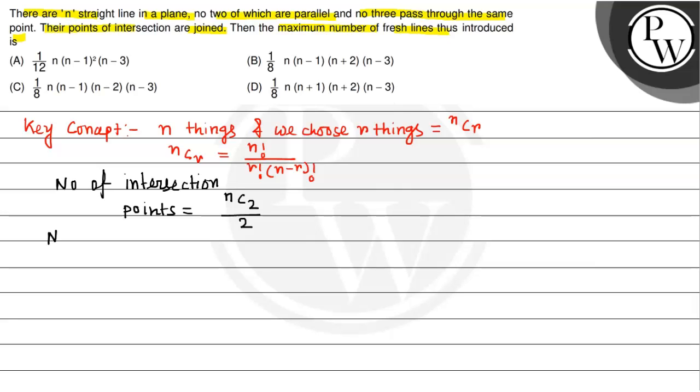Now, the number of ways of selecting another intersection point. Another intersection point, how to choose it?